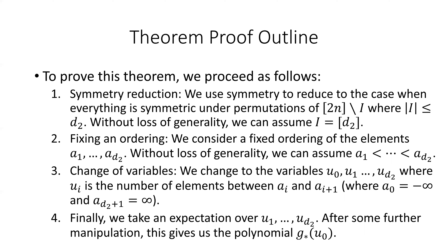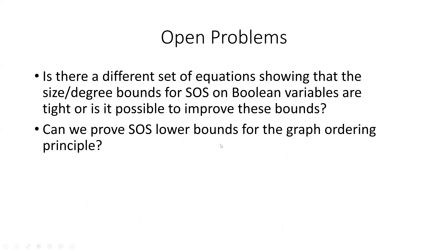If you'd like to know more about this or anything I've discussed, ask me or read the paper. I'll end by giving two open problems. The first is: is there a different set of equations showing that the size-degree bounds for sum of squares on Boolean variables are tight, or is it possible to improve these bounds? And second, can we prove sum of squares lower bounds for the graph ordering principle? Thank you very much for your attention.